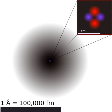Due to lanthanide contraction, five observations can be drawn. The size of lanthanide ions regularly decreases with atomic number. According to Fajans' rules, the decrease in size of lanthanide ions increases the covalent character and decreases the basic character. There is a regular decrease in their ionic radii, and a regular decrease in their tendency to act as a reducing agent with increase in atomic number. The second and third rows of d-block transition elements are quite close in properties; consequently, these elements occur together in natural minerals and are difficult to separate.